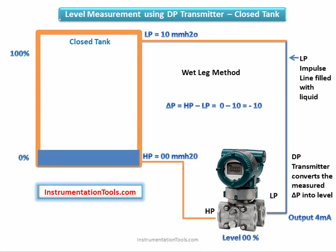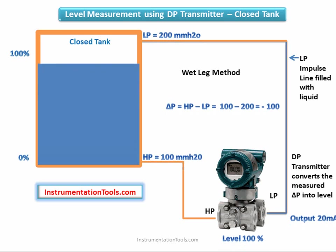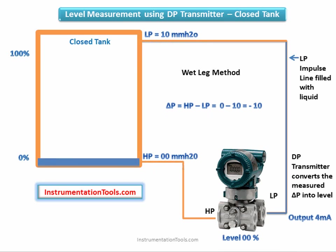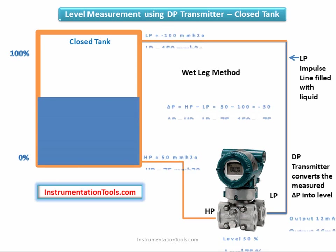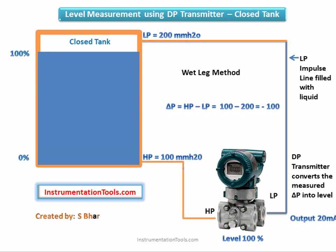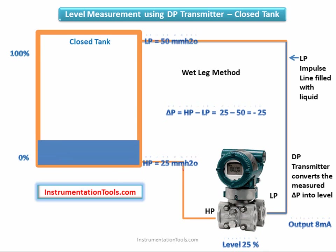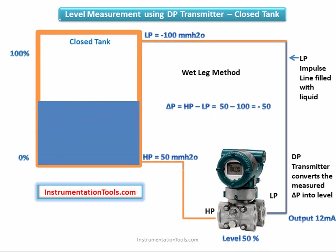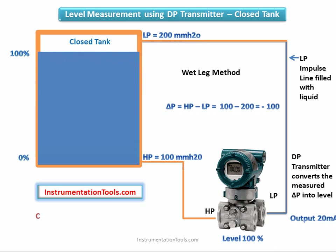In situations where the vapors of the process fluid tend to condense at ambient temperatures, the reference leg or LP impulse line cannot be kept dry and must instead be filled with liquid to produce a wet reference leg. In a wet leg system, the low pressure impulse line is completely filled with liquid. The wet leg affects differential pressure readings, which can result in negative values, and this differential pressure is used to measure tank level.